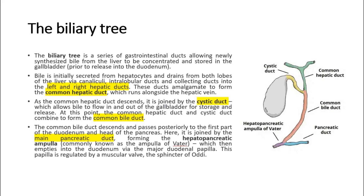These ducts amalgamate to form the common hepatic duct, which runs alongside the hepatic vein. As the common hepatic duct descends, it is joined by the cystic duct, which allows bile to flow in and out of the gallbladder for storage and release. At this point, the common hepatic duct and cystic duct combine to form the common bile duct. The common bile duct descends and passes posteriorly to the first part of the duodenum and head of the pancreas, where it is joined by the main pancreatic duct, forming the hepatopancreatic ampulla, commonly known as the ampulla of Vader, which then empties into the duodenum via the major duodenal papilla.